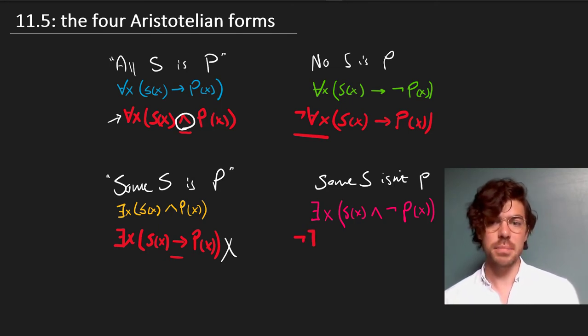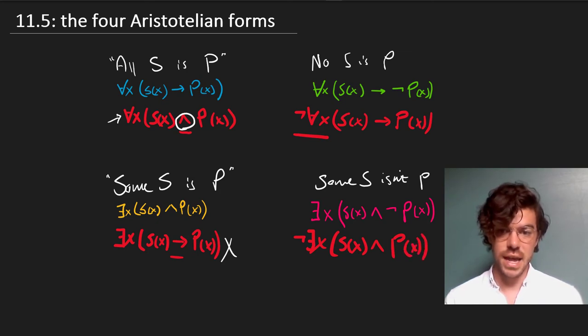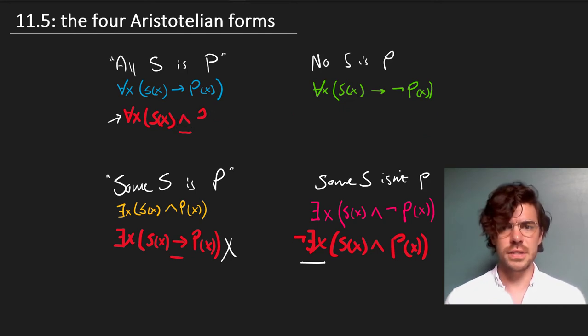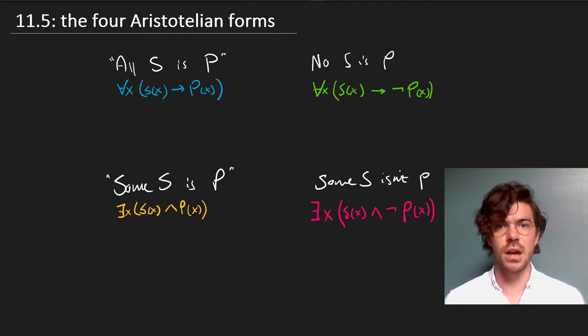Finally, we might be tempted to put the negation in front of our existential, giving us 'there doesn't exist an x that is an S and a P'. But this says there isn't any x which is S and P—that's 'no S is P', not 'some S isn't P'. All of these are wrong, and the correct ways to write the canonical Aristotelian forms are the ones we've given.